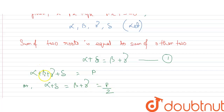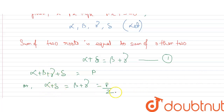So we can write alpha plus delta equals beta plus gamma equals p/2. Because in place of alpha plus delta we can put beta plus gamma, giving 2(beta + gamma). Similarly, in place of beta plus gamma we can put alpha plus delta, giving 2(alpha + delta). This is our equation 2.